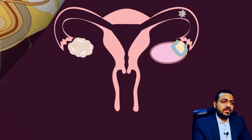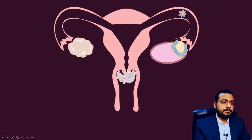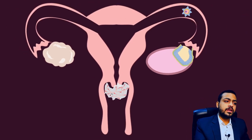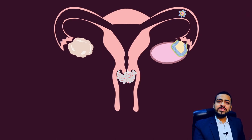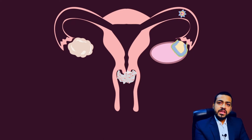Now, let's suppose that intercourse happens and semen mixed with millions of sperms is released into the upper vagina of the female. With each ejaculate, about two hundred to six hundred million sperms are released intermixed with semen into the upper part of the vagina of the female. Now, the vagina has quite an acidic environment.